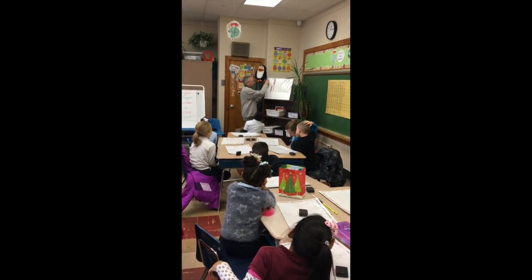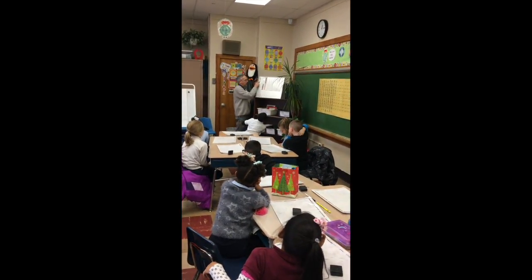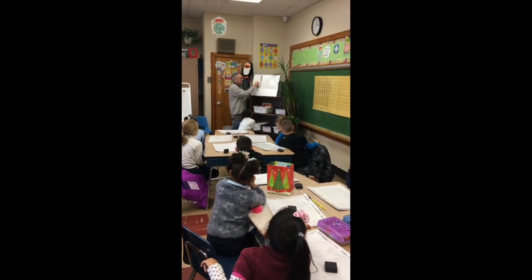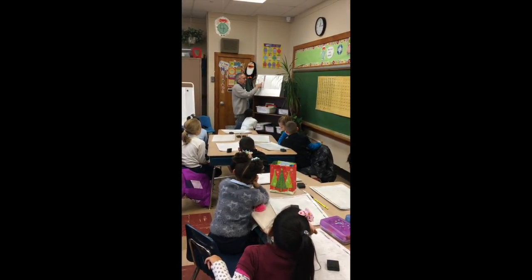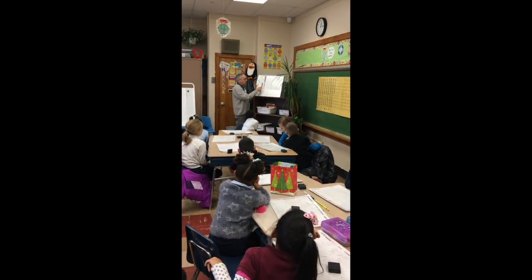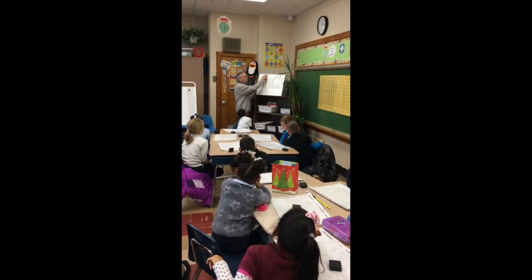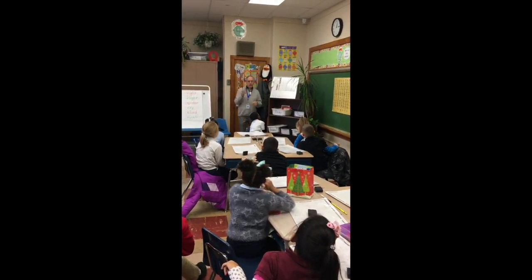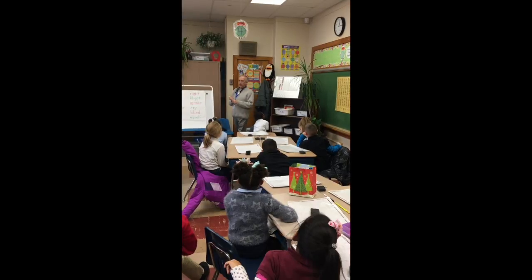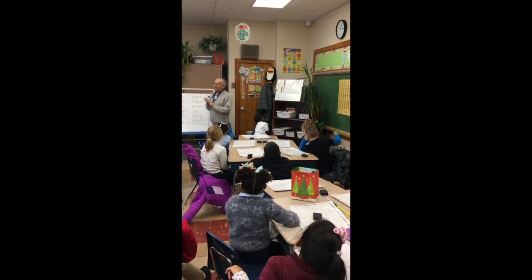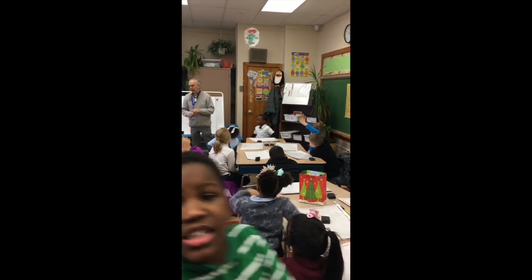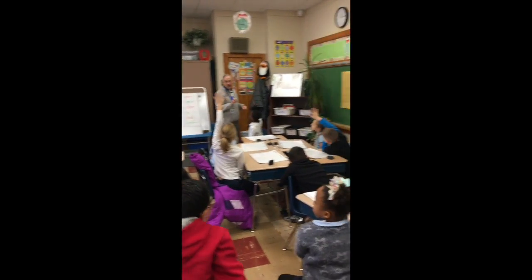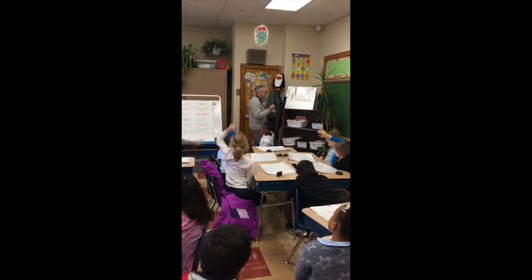Three dollars and twenty-five cents, she says. Let's count: one dollar, two dollars, three dollars, ten, fifteen, sixteen, seventeen, eighteen, nineteen, twenty, twenty-one, twenty-two, twenty-three, twenty-four, twenty-five. Jade's correct, it is three dollars and twenty-five cents. Who can tell me how do I write three dollars and twenty-five cents? Guadalupe?